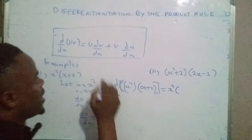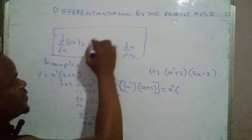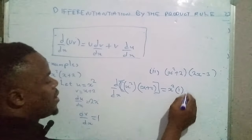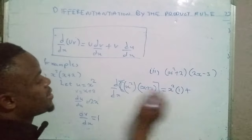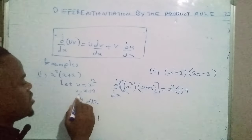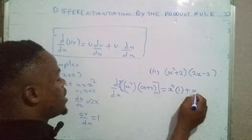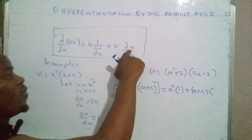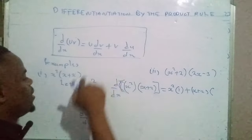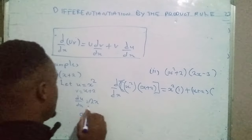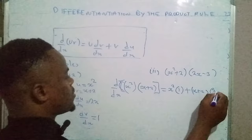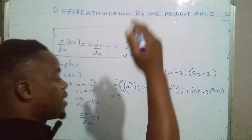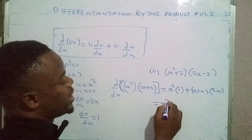multiplied by the derivative of the function v, which is dv/dx equal to one, plus v — which is x plus 2 — multiplied by the derivative of the function u, which is 2x. After having done that, we can expand the brackets: x squared times one gives x squared.